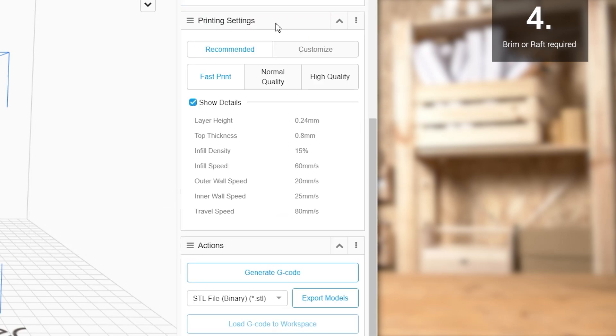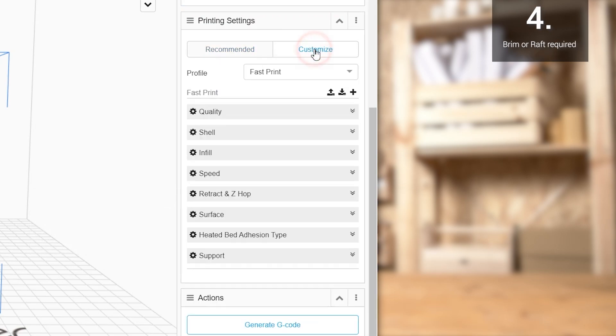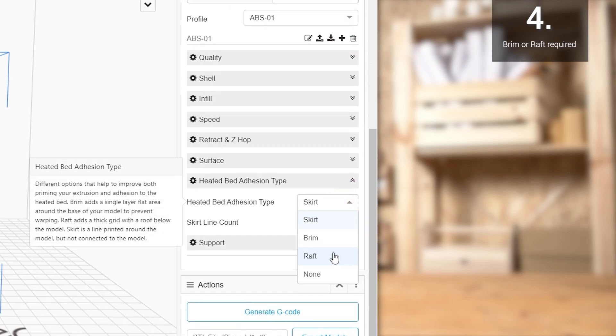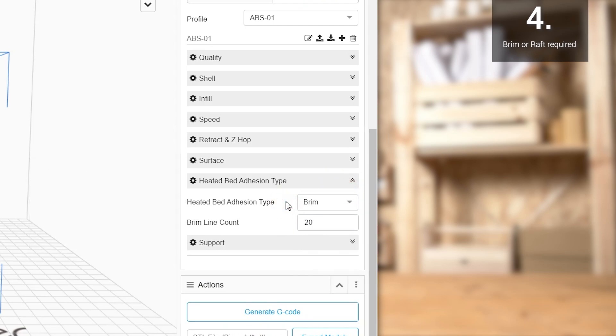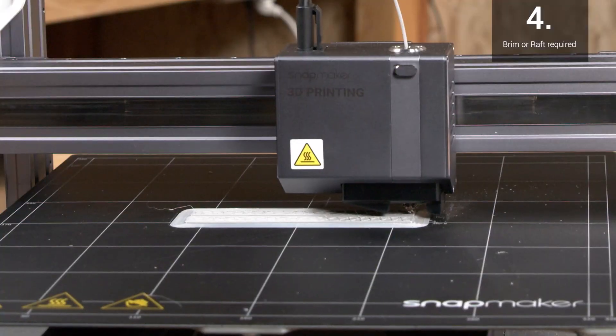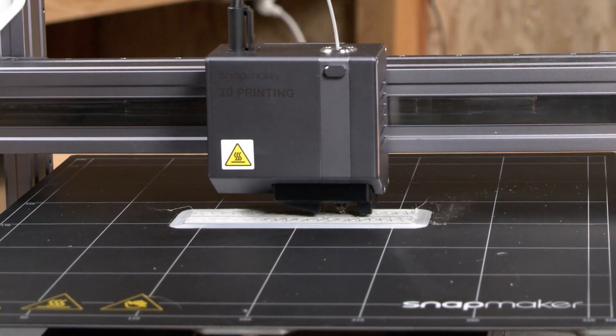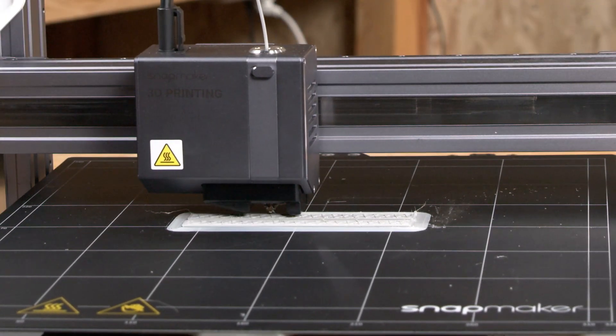When setting the parameters in Snapmaker Luban, you can go to Customize, Heated Bed Adhesion Type, and add Brim or Raft to your print. Both options will create additional surface contact between the print and the bed to help with first layer adhesion. If you can do all of the above, you are almost guaranteed a nice print with ABS.